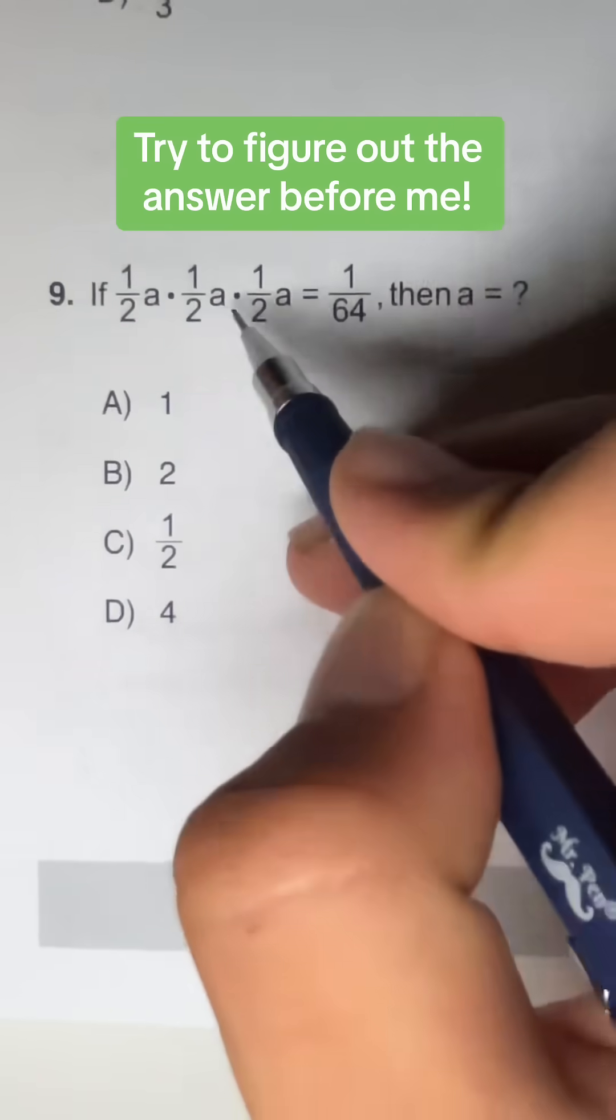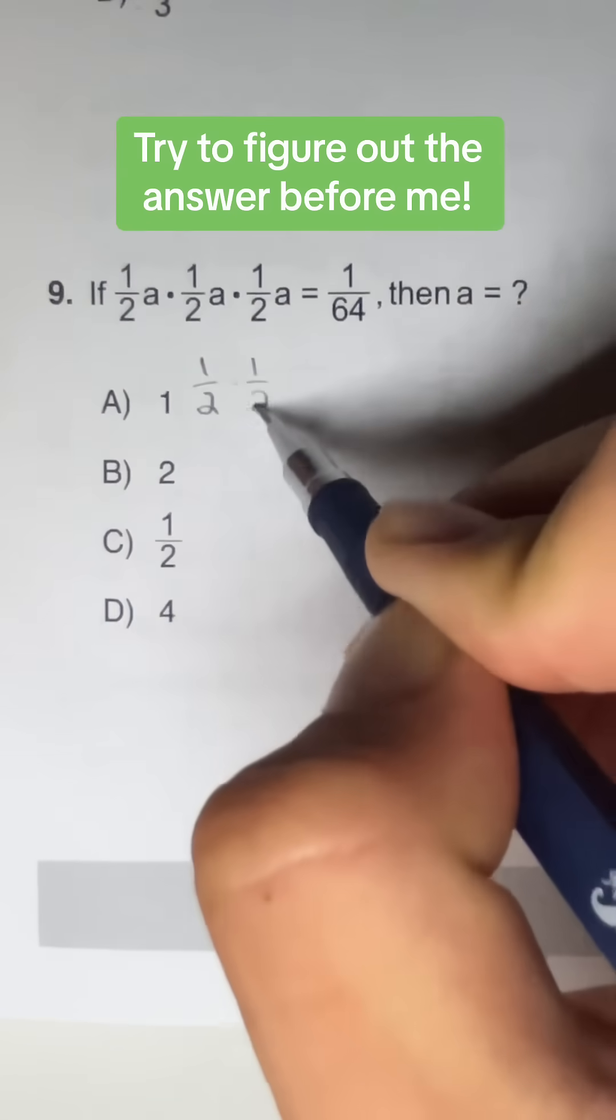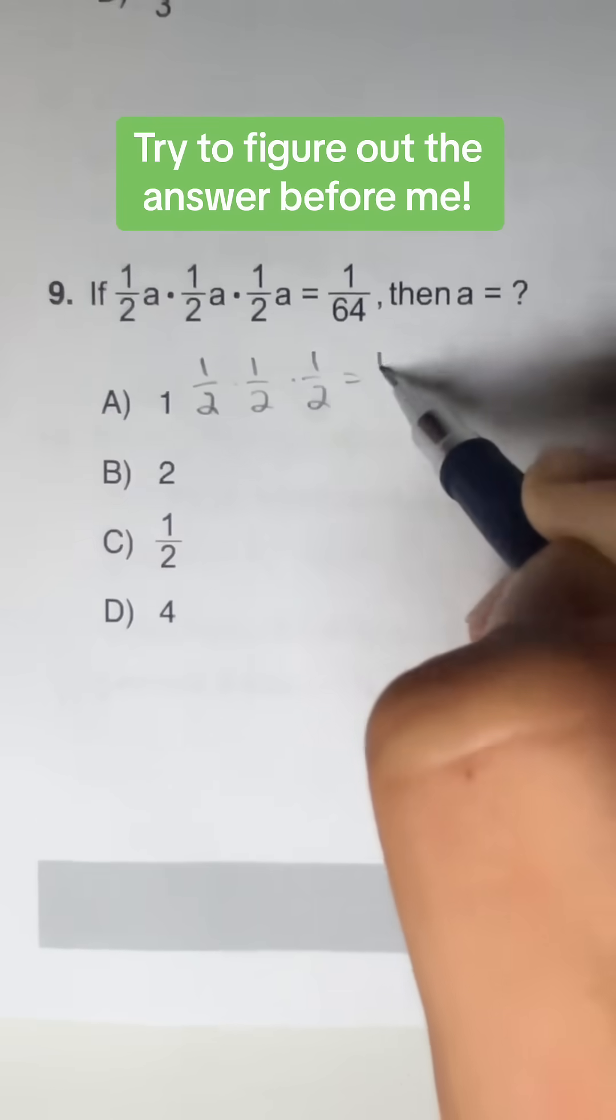So first thing we want to do is multiply the 1 halves. So we have 1 half times 1 half times 1 half. That's going to give us 1 over 8.